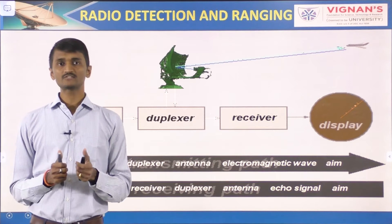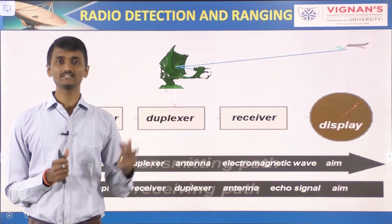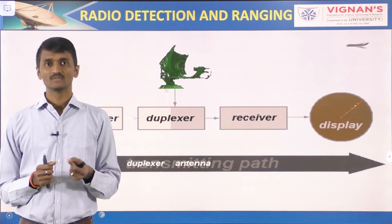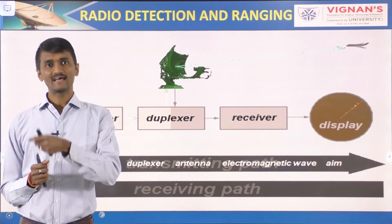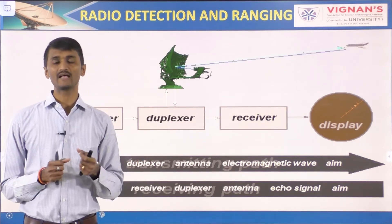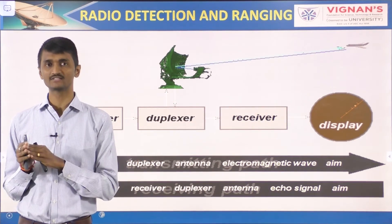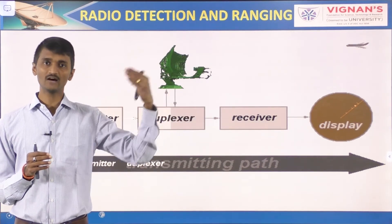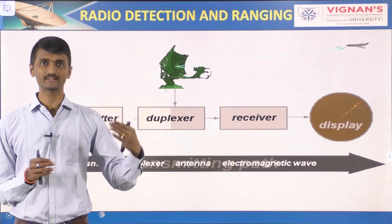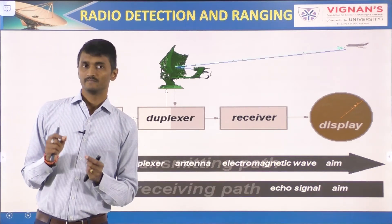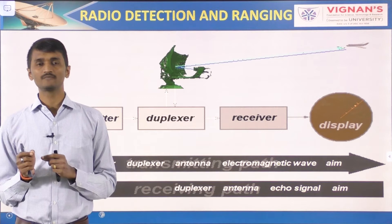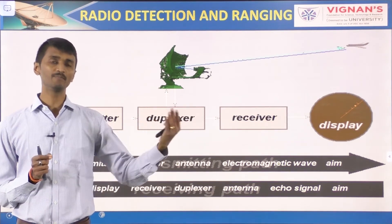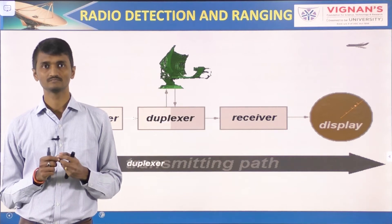The distance to the target is determined by measuring the time taken for the radar signal to travel to the target and return. The direction or angular position of the target may be determined from the direction of arrival of the reflected wavefront. The usual method of measuring the direction of arrival is with narrow beam antennas.